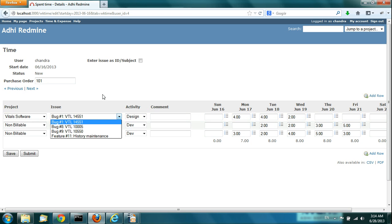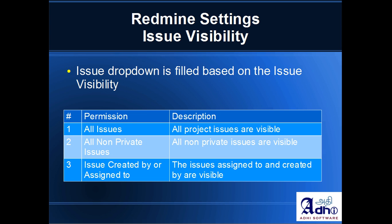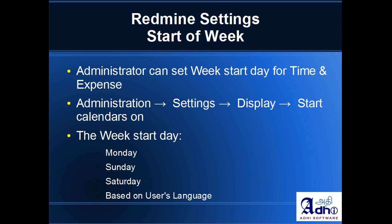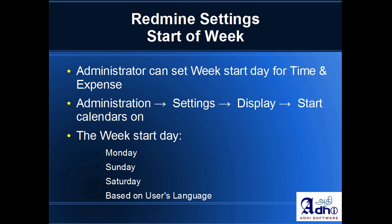That is the issue visibility configuration. The start of the week, which we have already discussed, can be changed to Saturday, Sunday, or Monday, or based on user language. That can be done from Settings > Display > Start Calendar. Those are the two Redmine settings.